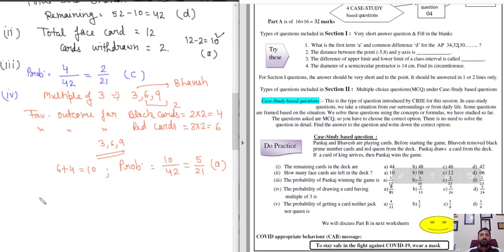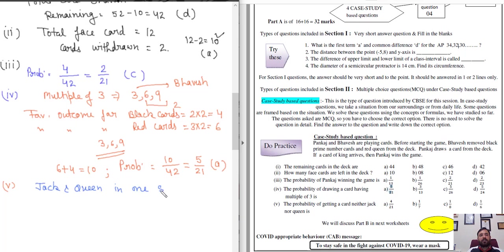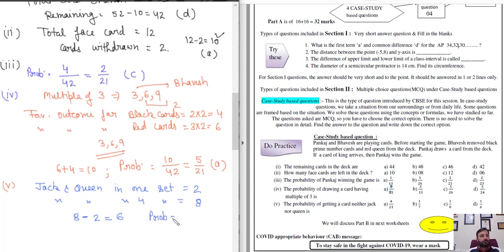Case Study Q5: What is the probability of getting a card that is neither a jack nor a queen? In a deck there are 4 jacks and 4 queens = 8 cards total. Bhavesh removed 2 queens (red queens), so remaining jacks and queens = 8 − 2 = 6. Probability = 6/42 = 1/7. The correct answer is B.